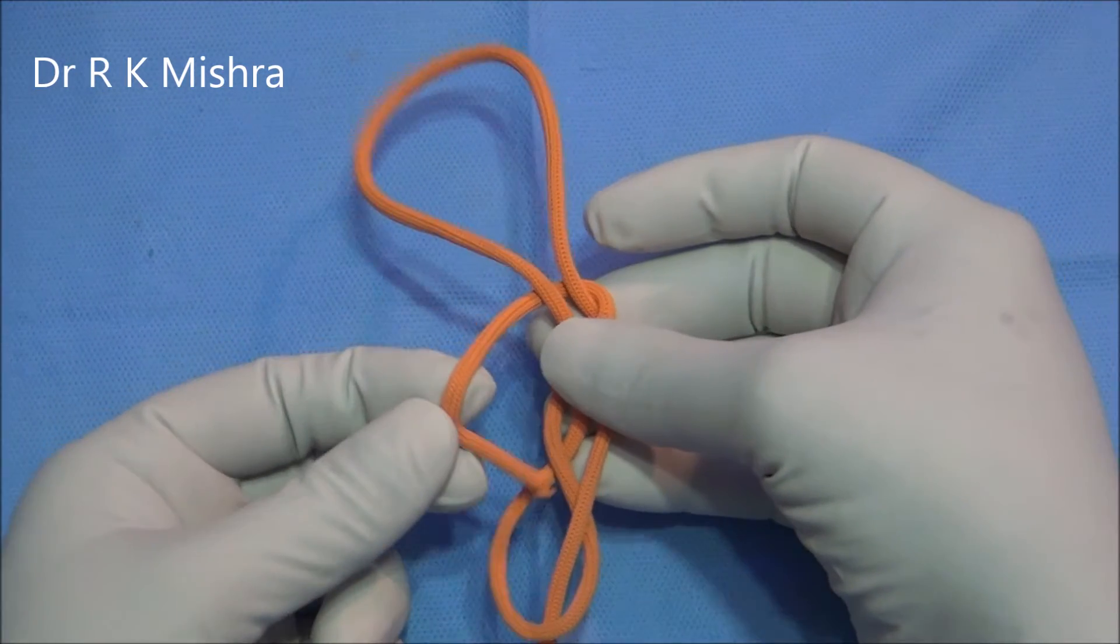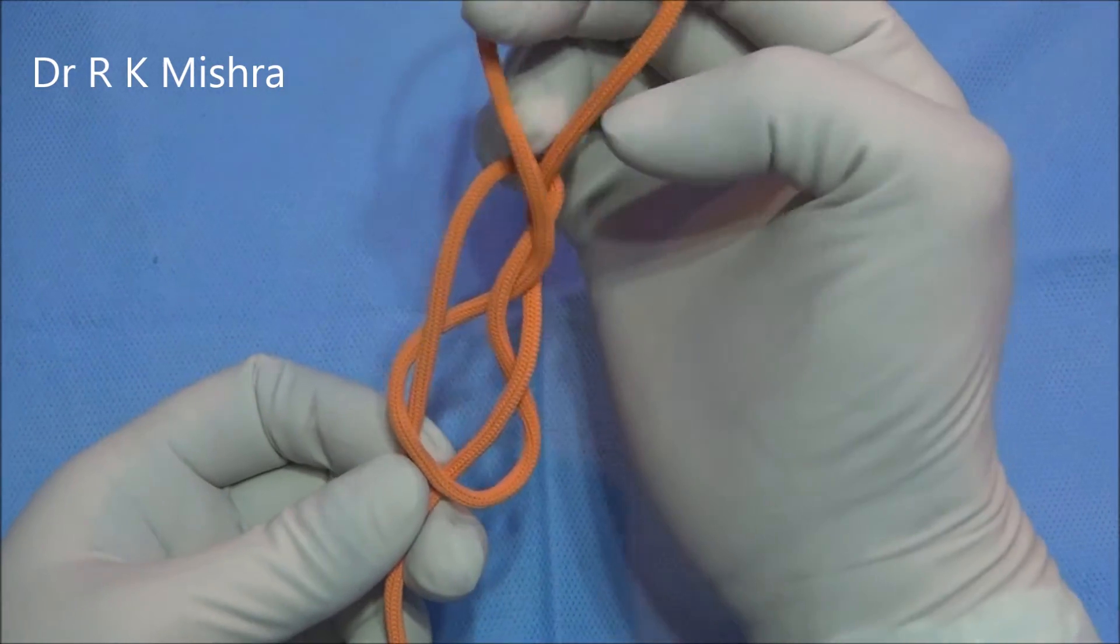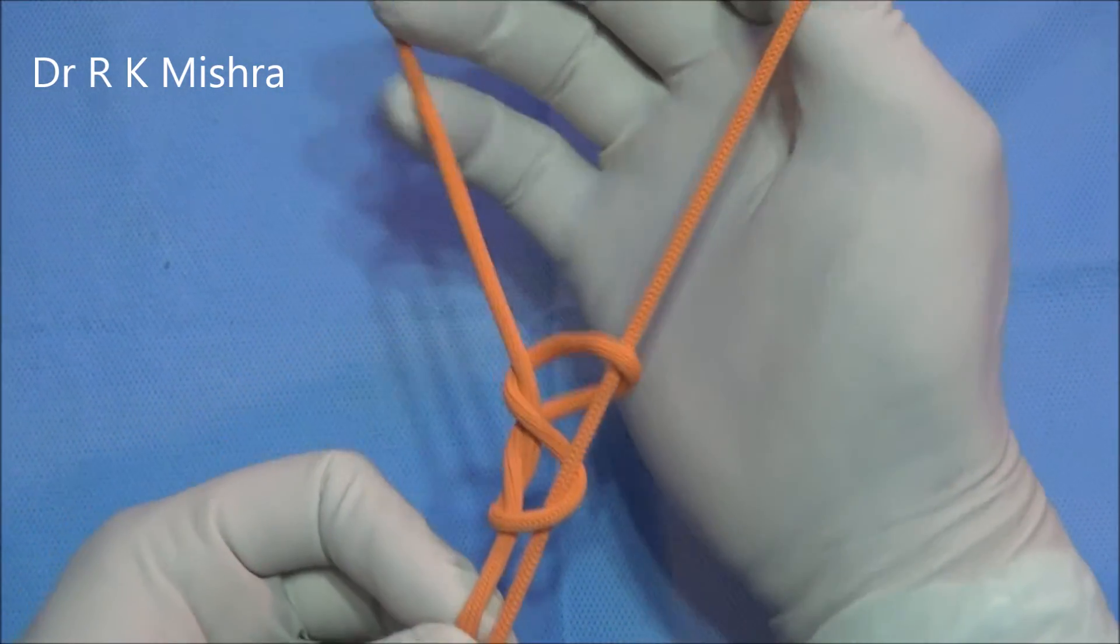Finally, introduce it into the first hitch. And it is done. This is the Western Knot.